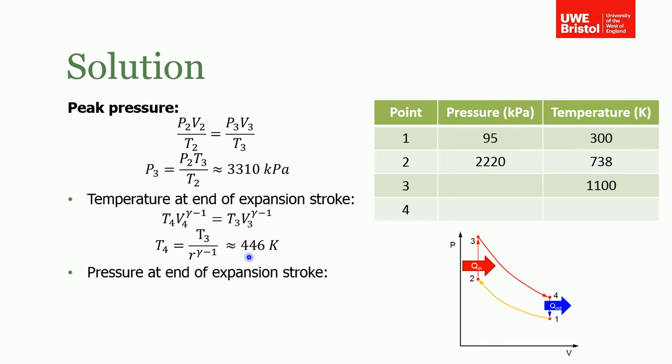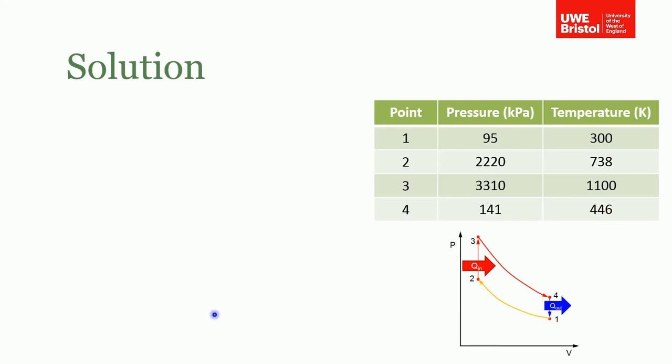Then just for completeness, you don't actually need this for the question, but you can solve to find out the final pressure. Putting all those values into our table, we now know all the temperatures and all the pressures throughout the cycle.